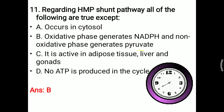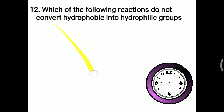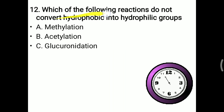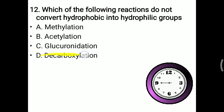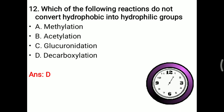Next MCQ: which of the following reactions does NOT convert hydrophobic into hydrophilic groups? Methylation (phase 2 biotransformation — makes hydrophilic), acetylation (phase 2 reaction), glucuronidation (most common phase 2 reaction, converts hydrophobic to hydrophilic). Decarboxylation removes a carbon dioxide molecule and is not involved in converting hydrophobic to hydrophilic. So the right answer is D — decarboxylation.